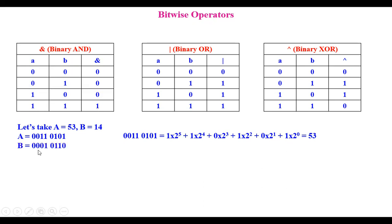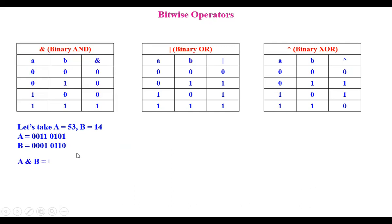B, in a similar way when converted to bits, gives 0, 0, 0, 1, 0, 1, 1, 0 — that is 14. Now when A AND B is performed, the operation is performed on each and every bit of A and B. Starting: 1 AND 0 is 0; 0 AND 1 is 0; 1 AND 1 results in 1; 0 AND 0 is 0; 1 AND 1 again 1; 1 AND 0 is 0; 0 AND 0 is 0. When converted to decimal, we get a value of 20. So that is the AND operation performed on A and B.